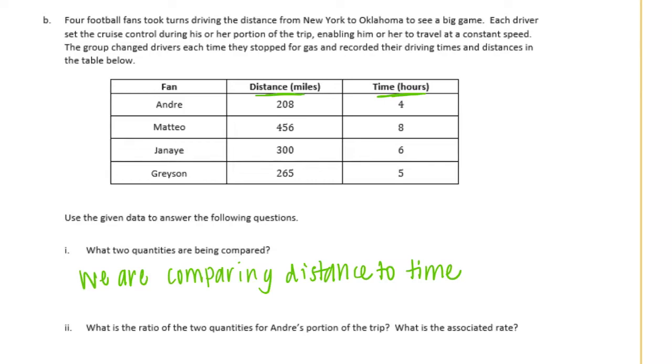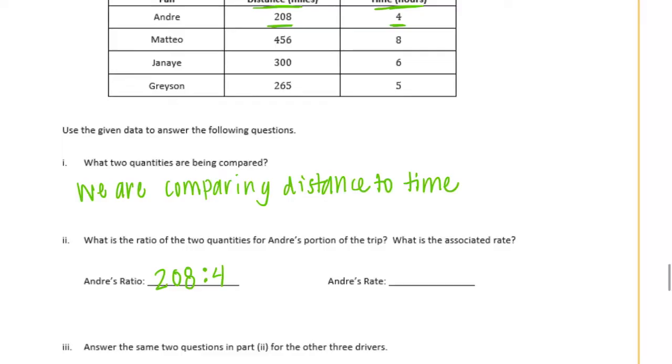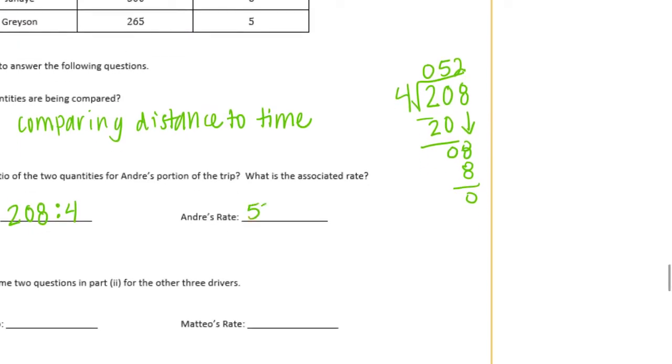What is the ratio of the two quantities for Andre's portion of the trip? What is the associated rate? So first, it wants to know the ratio for Andre's portion. So Andre drove 208 miles in four hours. So the ratio we would just write was 208 to 4. And we want to know the rate. So we want to know how much he was going for every one hour. Basically, how many miles per hour. And we can do that by doing 208 divided by 4. 4 can't go into 2. It goes into 20 five times. Bring down the 8. 4 goes into 8 two times. So Andre's rate was 52 miles per hour.